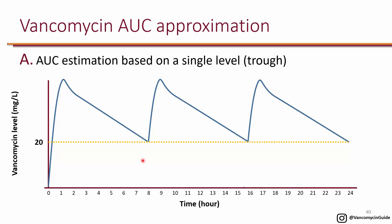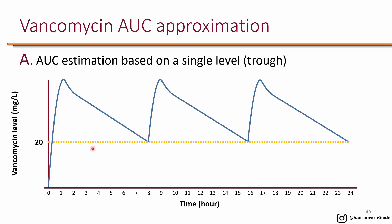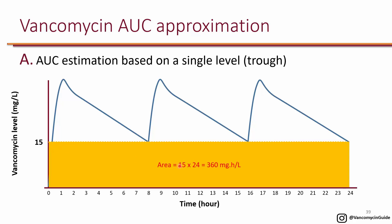If you have a trough of 20, then 20 times 24 is at least 480, so you definitely achieve an AUC of at least 400 because you also have all those additional areas on top—at minimum 480 plus all of those. So a trough of 20 is overkill. For serious infections, targeting a trough of 15 to 20 basically guarantees an AUC of 400. In the case of 15 to 20, however, this could actually be overdosing.